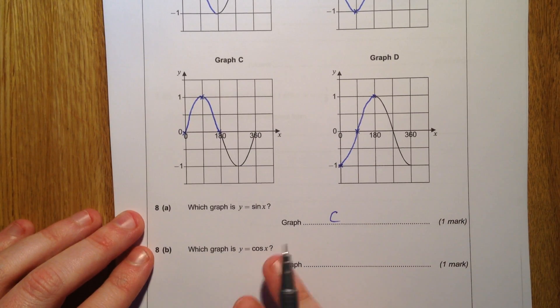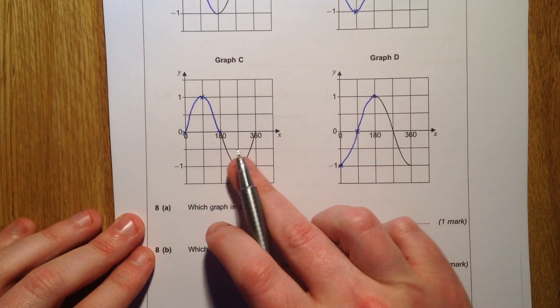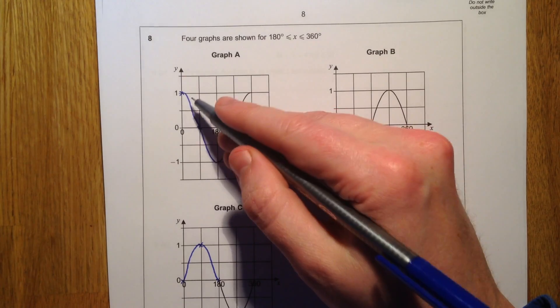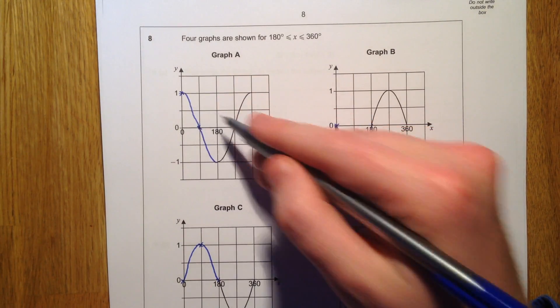And which is the graph of y equals cos x? Well, y equals cos x looks a little bit like sin x, but instead of starting from the middle, it starts from the top. So it's graph A.